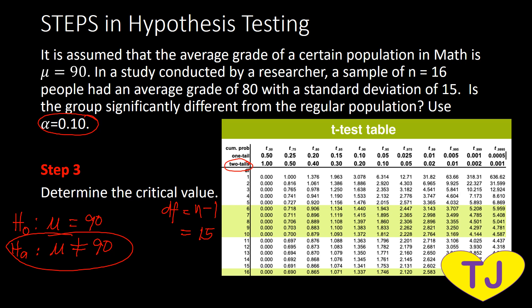We are now ready to look for the critical value. Following the T table with two tails, alpha = 0.10, and DF = 15, we find the intersection by moving across and down. The critical value is 1.753. Since this is two-tailed, we have both positive and negative 1.753 as our critical values.